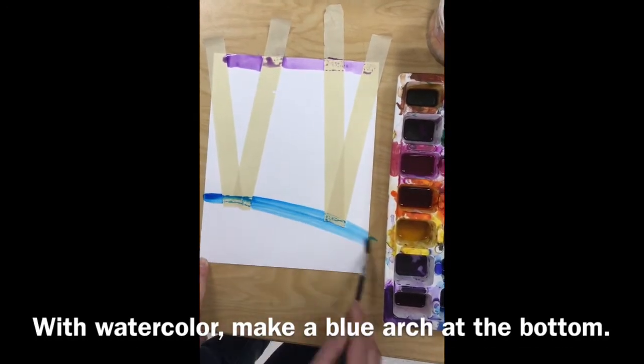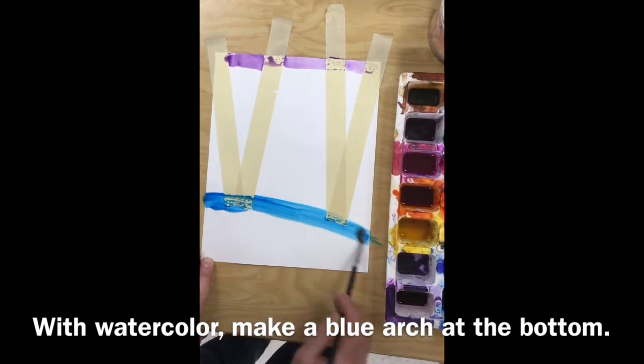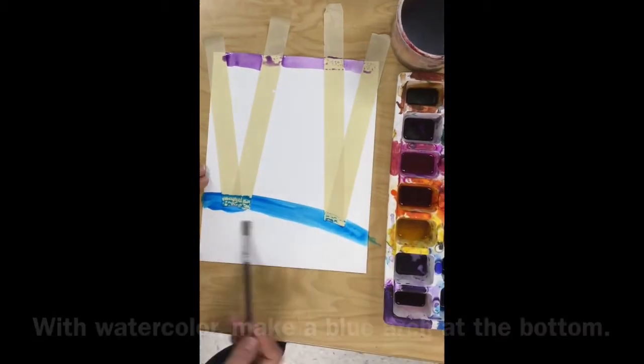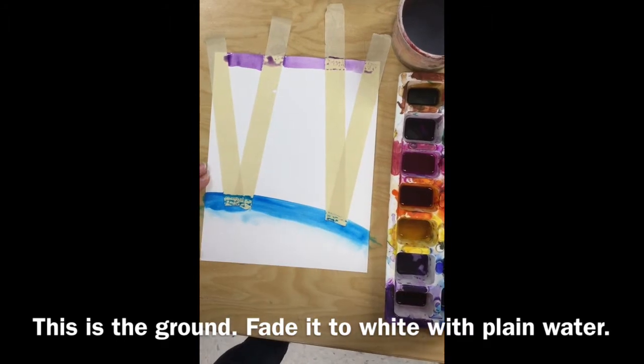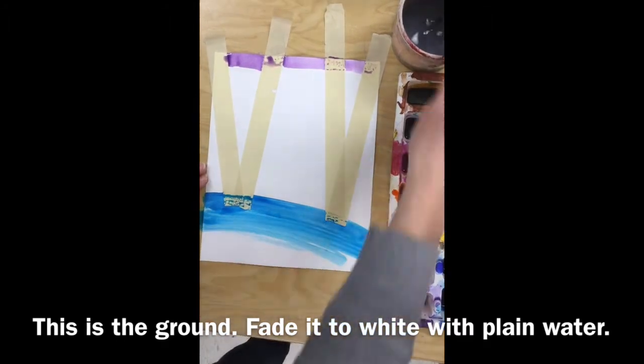With watercolor, make a blue arc on the bottom. This should go over both of the bases of the trees. This is going to be the ground.